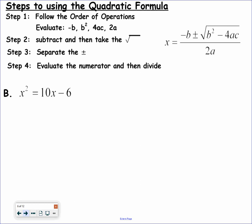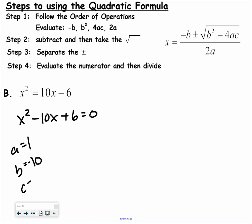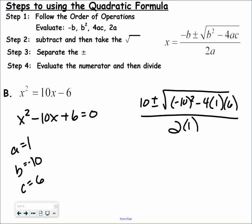Just like any other time I'm solving, I need it to equal 0. So I'm going to subtract 10x and add 6 so that it equals 0. Now A is 1, B is negative 10, and C is positive 6. It's negative B plus or minus the square root of B squared minus 4AC, all over 2A. The hard part is the discriminant — the stuff under the radical. So 100 minus 24 gives me 76.